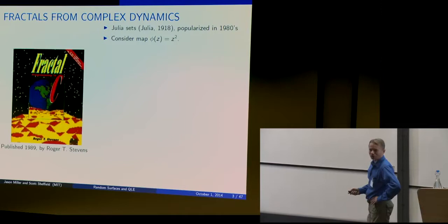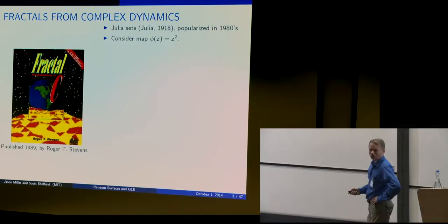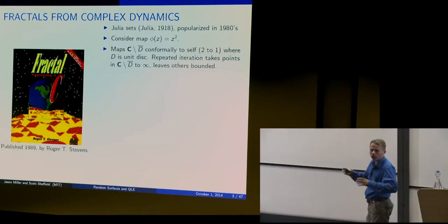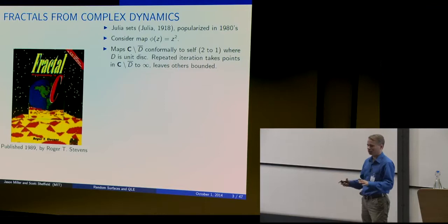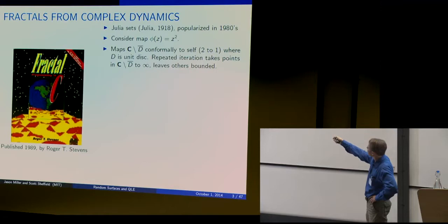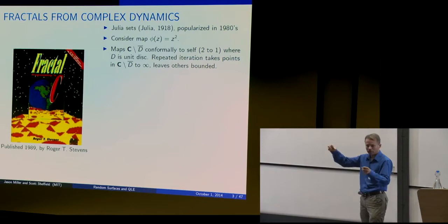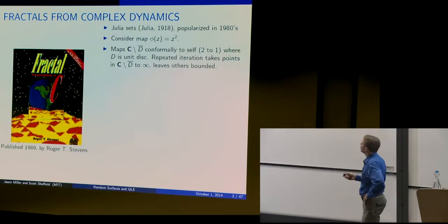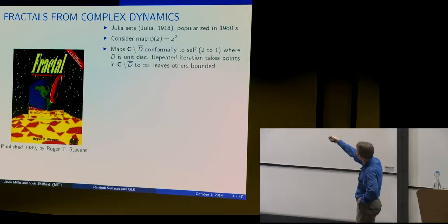You consider this map φ(z) = z². This maps the complex plane minus the unit disk to itself. If you start with something whose modulus is bigger than one, its square will have modulus bigger than one. It's a conformal map, in particular a two-to-one map from the complement of the unit disk to itself. If you apply repeated iteration, any point out in this complement will drift off to infinity, and any point on the boundary of the unit disk will stay on the boundary.